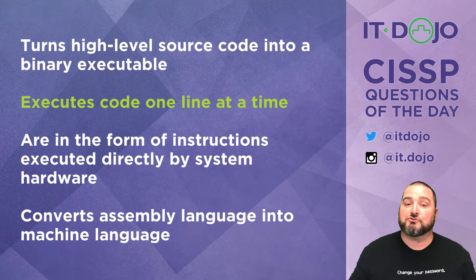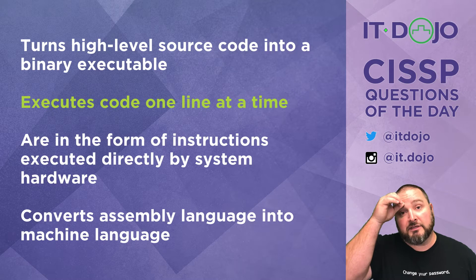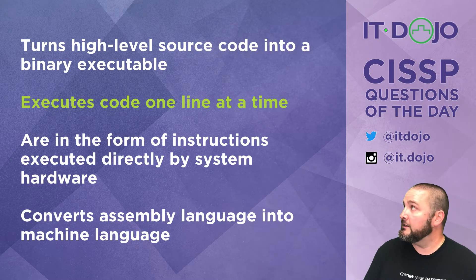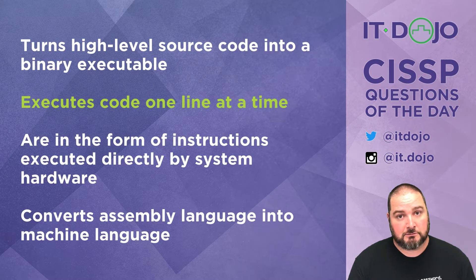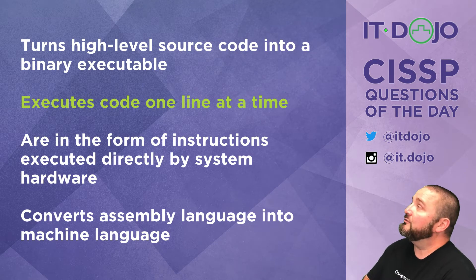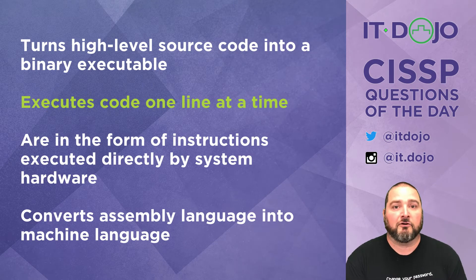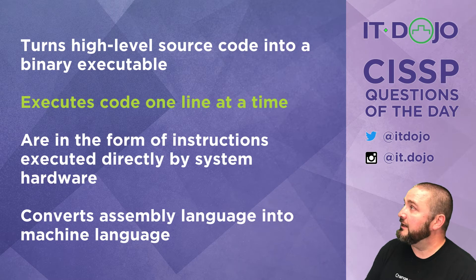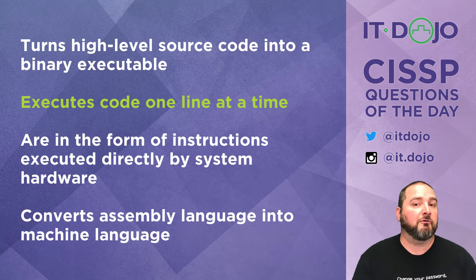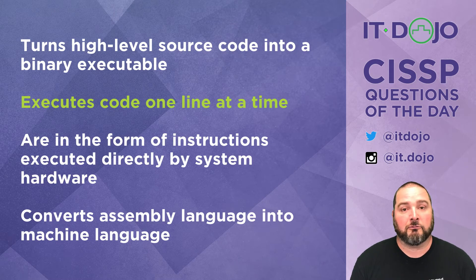The third choice says that they are in the form of instructions directly executed by the computer's hardware. That is actually what machine language is, so that is not a characteristic of interpreted languages — interpreted languages are much higher level than machine languages. The final answer choice, which is not correct, is that it converts assembly language into machine language, and that's actually what an assembler does. So you have compilers, interpreters, and assemblers, and the answer is that an interpreter executes lines of code one at a time.